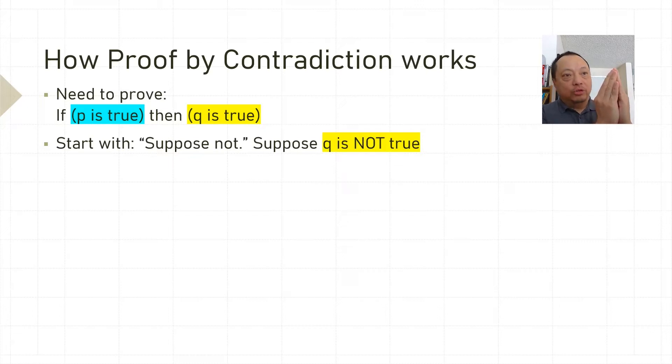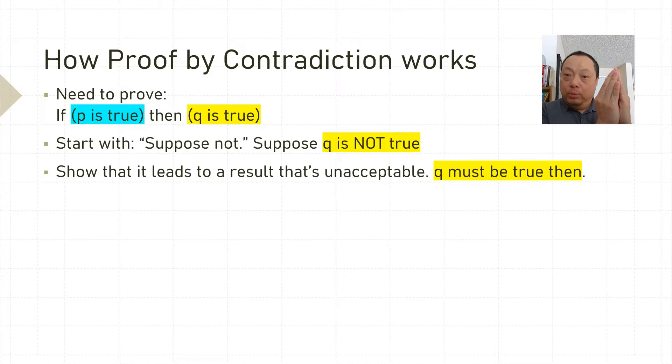A proof by contradiction starts by supposing that the conclusion isn't true. Suppose Q is not true. Then we do math, sometimes a lot of math,